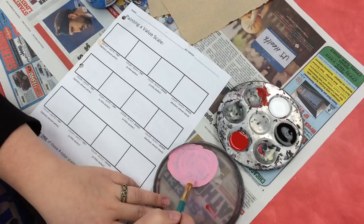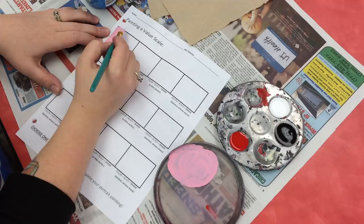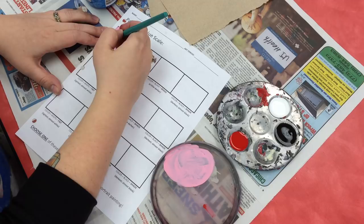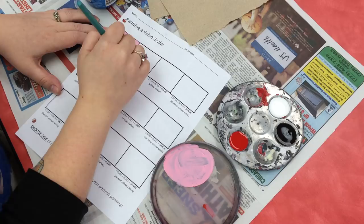Once I've thoroughly mixed it so it's nice and even, and it's a solid color, it's not streaky, then I can go in and paint it on my worksheet. Try to make this as neat as possible. I have kind of a big brush here, but that's okay.